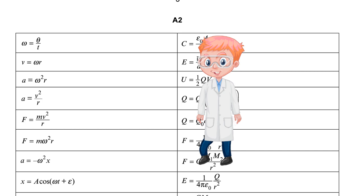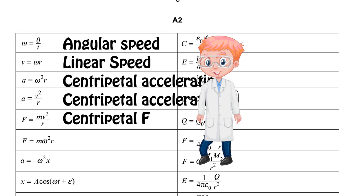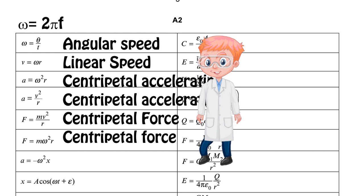On our left hand side, the first six are for circular motion. The missing one here that I would add in is our equation linking omega to f. So omega is 2 pi f. We use that quite often so I'd write it in.